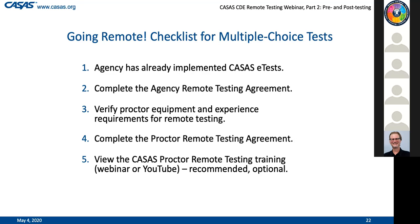You'll need to complete the agency-level agreement we just talked about. You'll need to make sure that the proctor has the necessary equipment to implement the approach you decide to use. Ideally they're experienced in e-tests so they'll have an easier time doing this. You'll have them complete that proctor remote testing agreement. Then make sure they know how to access the training materials on the CASAS website.